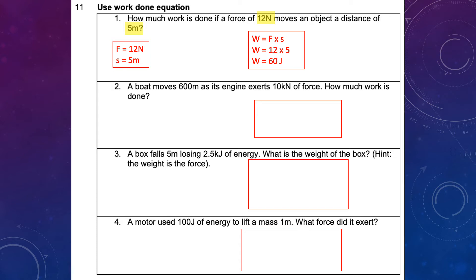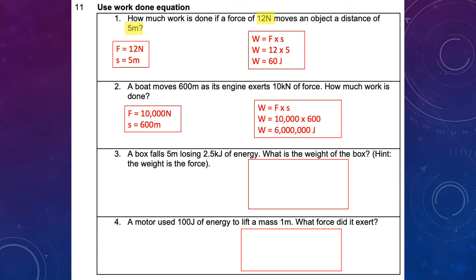For number 2, force is 10,000 newtons — multiply by a thousand. Displacement was already in meters, so no conversion needed. Same equation W equals F times s: substitute the numbers and you get 6,000,000 joules.